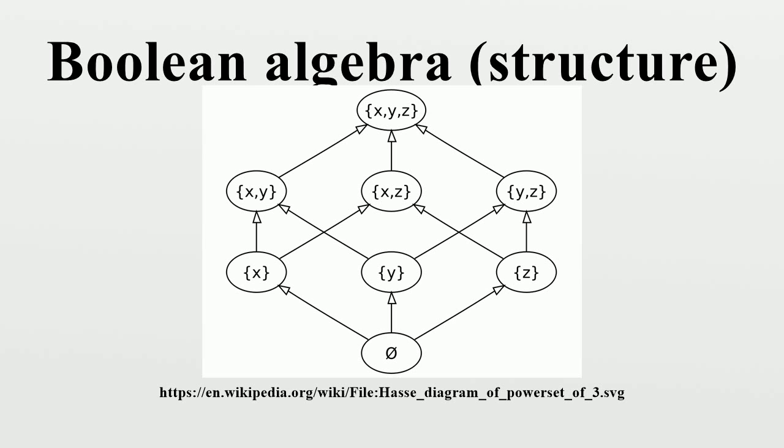Conversely, if a Boolean ring A is given, we can turn it into a Boolean algebra by defining x ∨ y = x + y + xy and x ∧ y = xy. Since these two constructions are inverses of each other, we can say that every Boolean ring arises from a Boolean algebra, and vice versa.